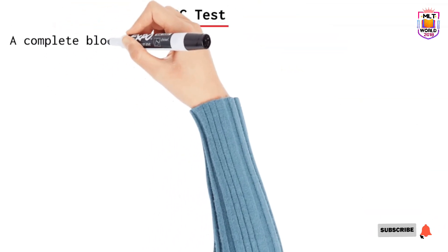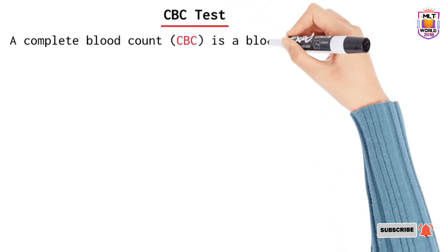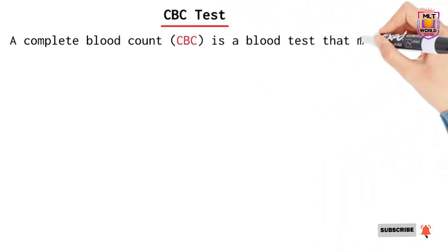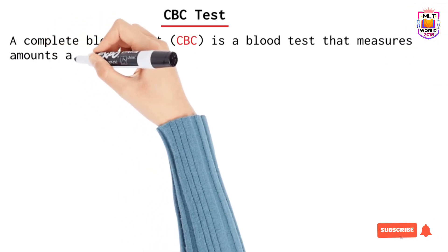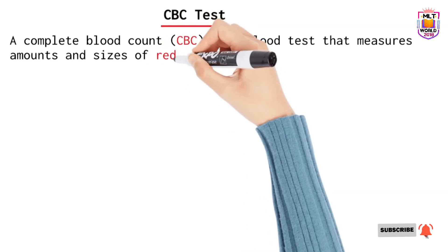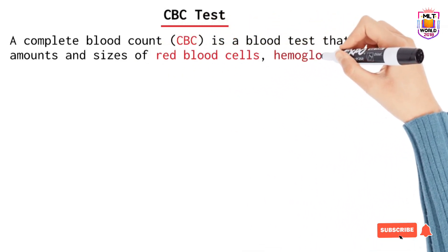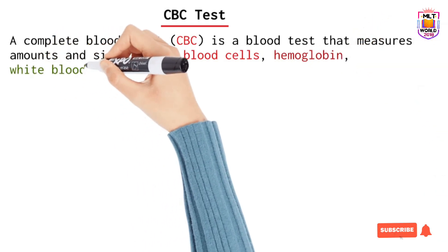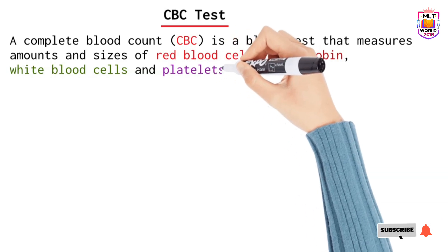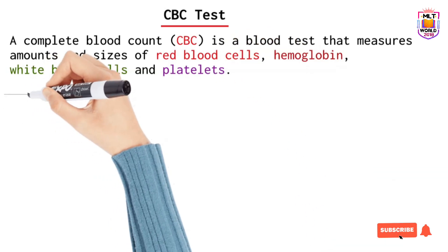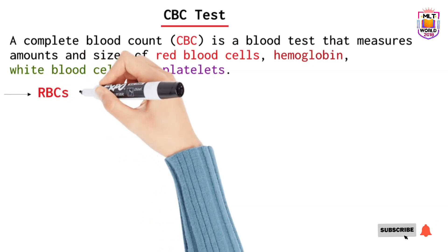A complete blood count report includes the amount and size of red blood cells, the amount of white blood cells, differentials, platelets, and hemoglobin. For red blood cells we look at both size and number, but for the other components we look at the amount only.